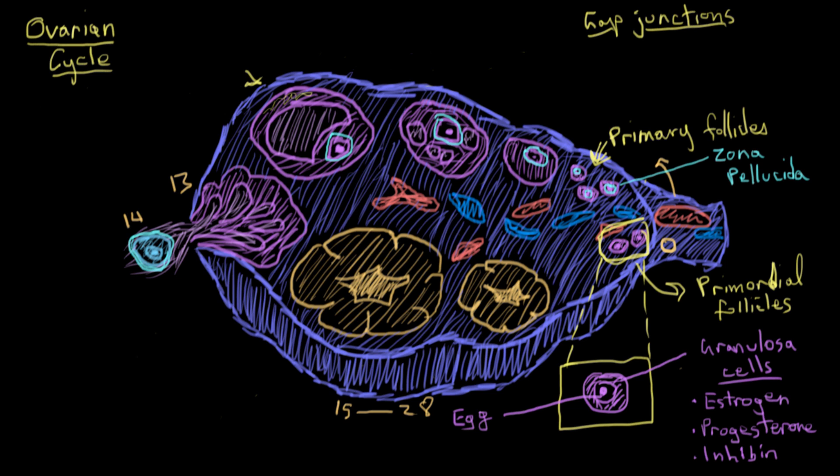So as we develop from our primordial to our primary to our next follicle here, called our preantral follicle, and you'll see why it's called that in a minute, the granulosa cells are actually starting to divide and become a lot greater in number. You can see that there's a pretty big difference in granulosa cell number from our primary follicles to our preantral follicle here.